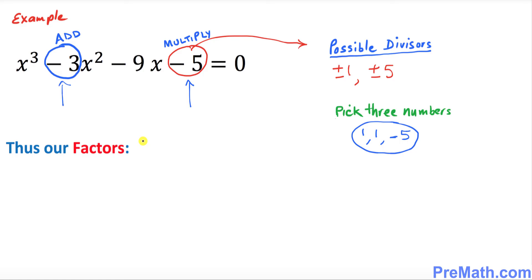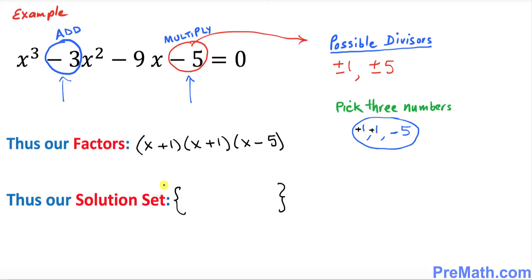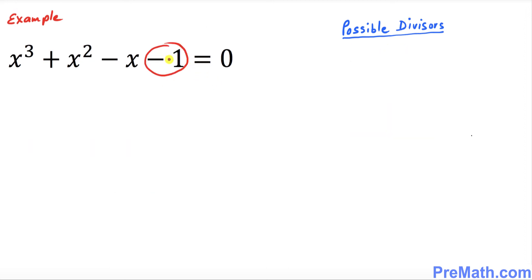So our factors are simply: this is a plus sign, this is a plus, and this is a minus — so it's going to become x plus 1 times x plus 1 times x minus 5. These numbers 1, 1, and negative 5 were the only feasible numbers that when added give negative 3 and when multiplied give negative 5. Our solution set is just you change the sign: negative 1, negative 1, and positive 5. That is our answer.